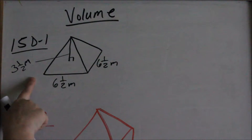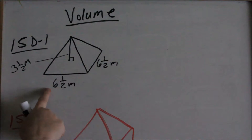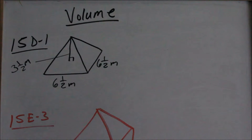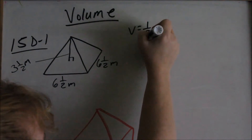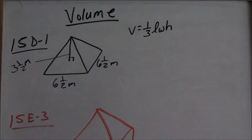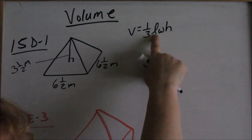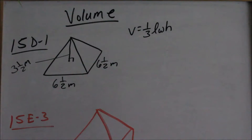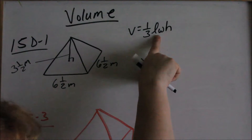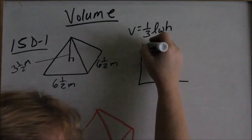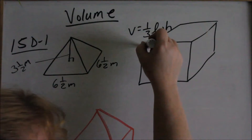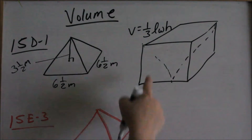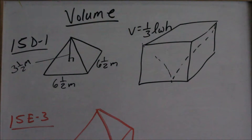We're looking at 15D1. It's a pyramid with a square base because it's six and a half by six and a half. The volume of a pyramid is one-third the length times the width times the height. Volume is the area of the base times the height — the area of the base is length times width, and then you do one-third times the height. This comes from the volume of a box, which is length times width times height. If you have a box and chop part of it off to form a pyramid, that's where the formula comes from — it's one-third the volume of a box.